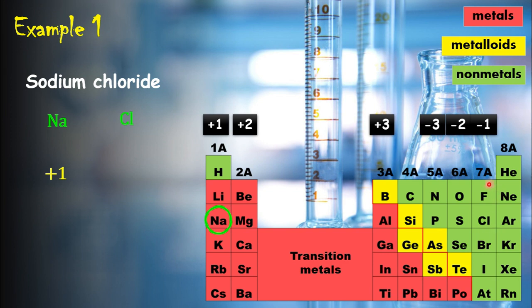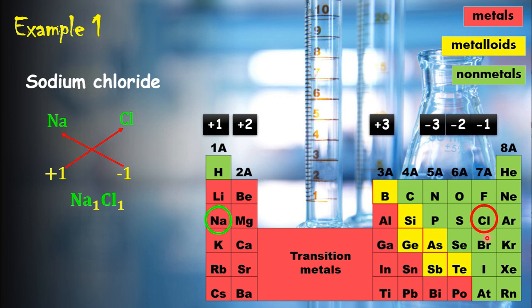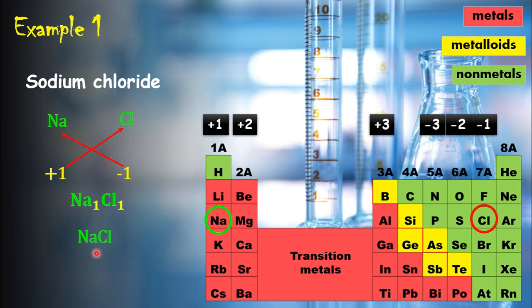In the periodic table, chlorine is in group seven, which means there are seven electrons in the outer shell. Group seven elements tend to gain one electron to obtain their nearest stable electron configuration. Therefore the ionic charge of group seven elements is always minus one, so the ionic charge of chlorine is minus one. The third step is to switch the charge numbers and write as subscript. The ratio is one to one, so we omit the ones, and the chemical formula for sodium chloride is NaCl.